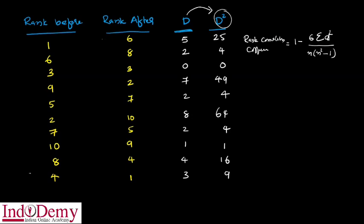Okay, this is our equation: 1 minus 6 into sigma D-square. We insert these values. 1 minus 6 into sigma D-square — we find the sum of D-square, which gives us 176. So sigma D-square equals 176.